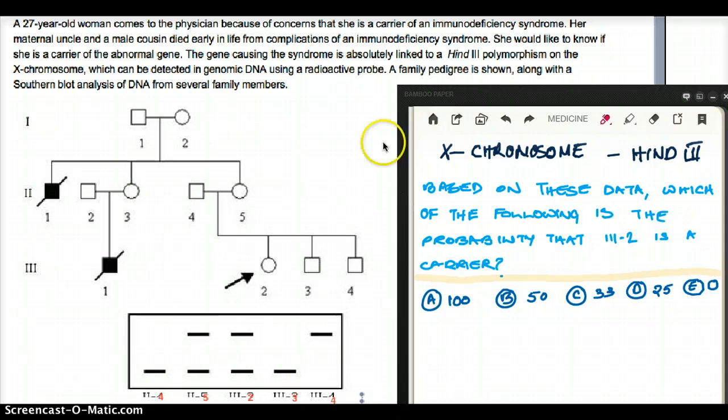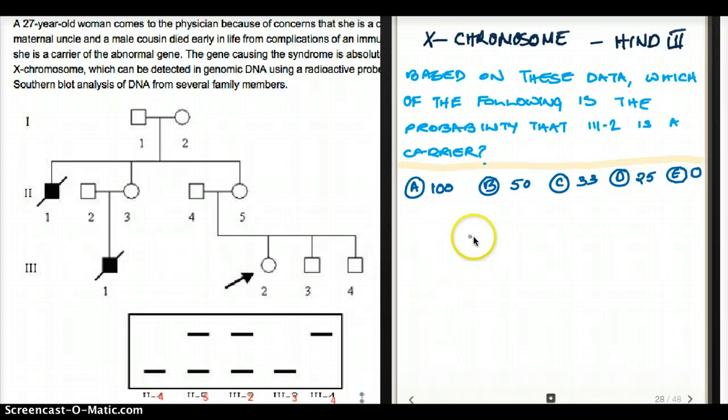Okay. So, first of all, they already told us that this is an X-linked disease with HIND3 polymorphism. So, let's ignore the southern blot for a second. We're going to go at, this is the first generation. We have the father and the mother and they made three offspring, one son and two daughters. And we can see that the son had the disease. And the son has how many chromosomes? X and Y. So, the X chromosome in this son had the disease. So, the X must have come from the mother or 1,2. So, the 1,2 must have been the carrier. So, I'm going to draw this here again.